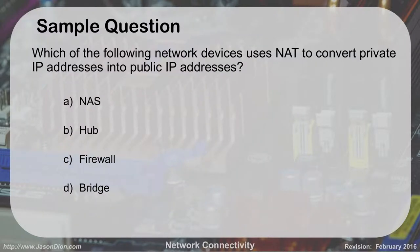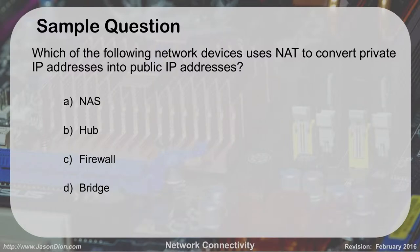Which of the following network devices uses NAT to convert private IP space into public IP addresses — a NAS, a hub, a firewall, or a bridge? The answer is a firewall. The other device that can do this is a router. Most routers have a firewall built into them, especially in the small office, home office environment. Routers and firewalls both can do this NAT translation for you.